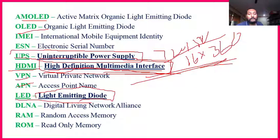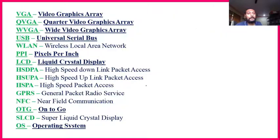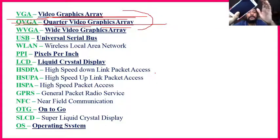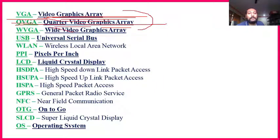LED — Light Emitting Diode — is important; this is your room light. VGA — Video Graphics Array — is also a little bit important. Then QVGA — Quarter Video Graphics Array — and WVGA — Wide Video Graphics Array. When we say our mobile screen is covered by Gorilla Glass, all these display specifications come under Video Graphics Array and its variants.